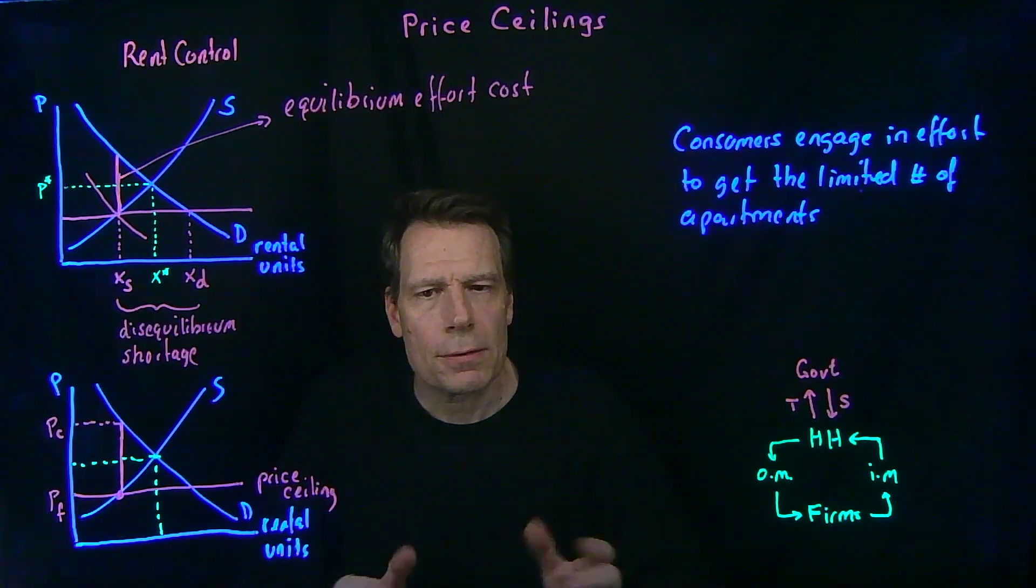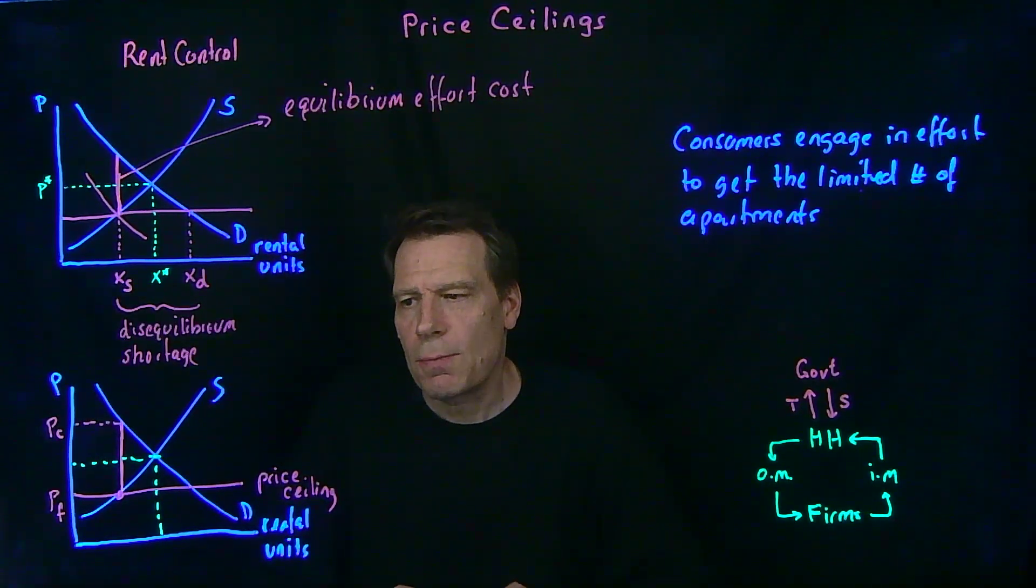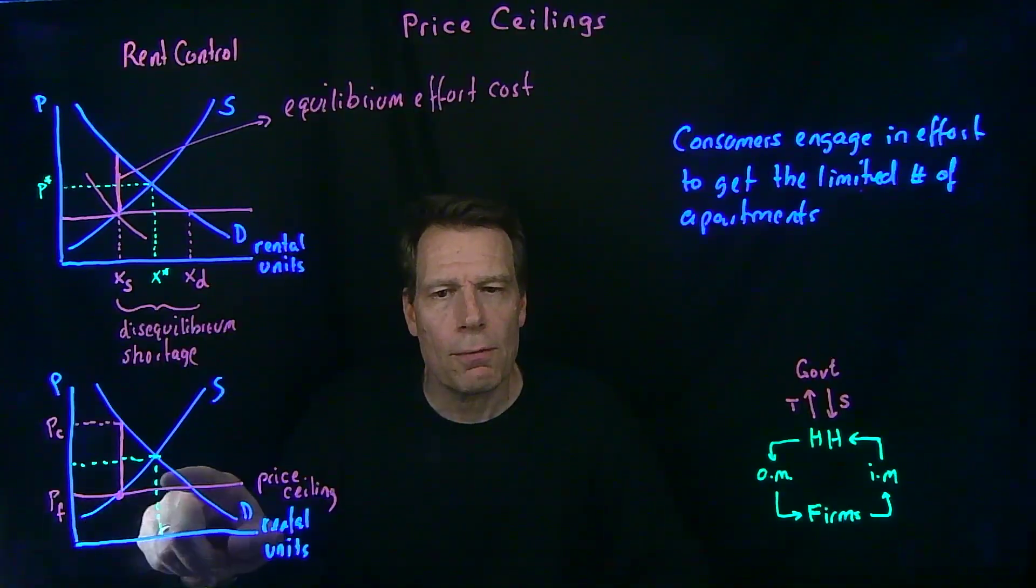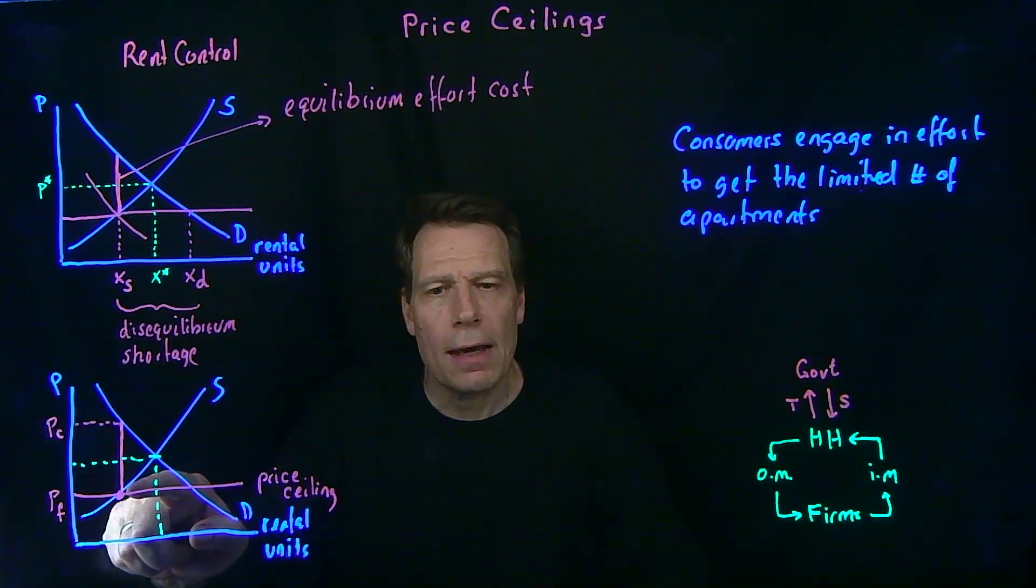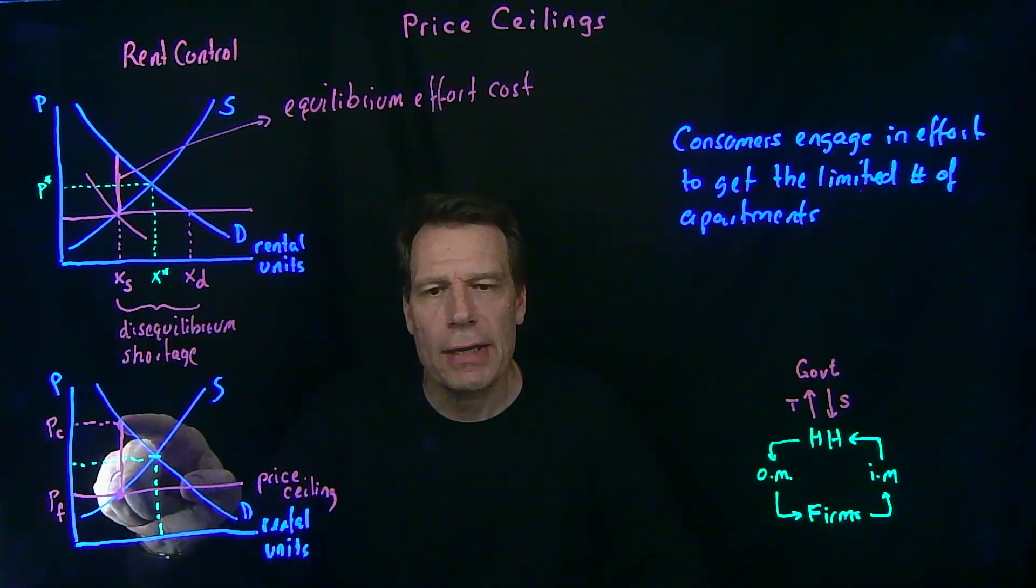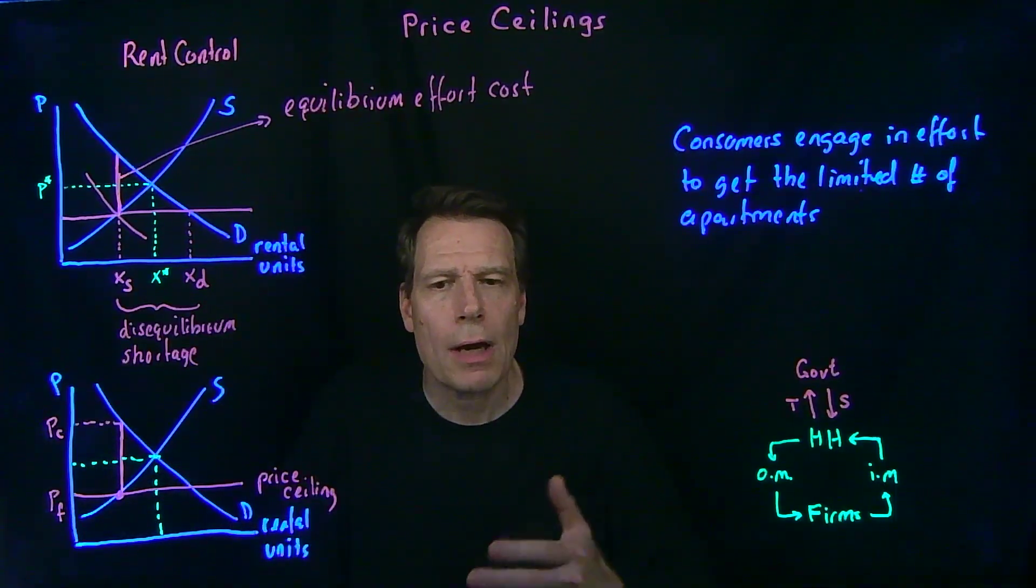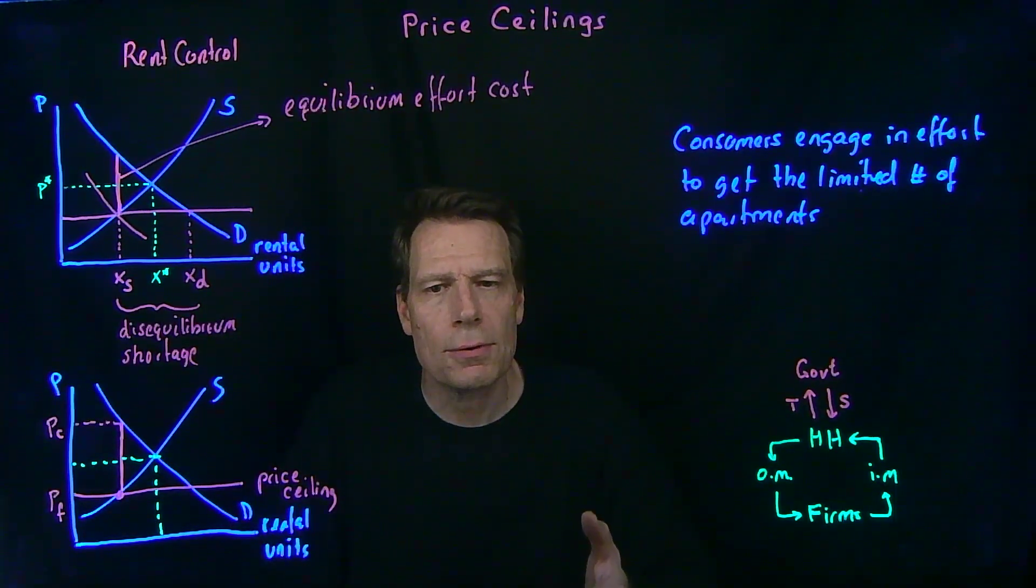Now, that's an odd result. Rent control policies are put in place in order to make housing more affordable. But this picture suggests that while firms will receive lower rents, those who end up in those apartments will actually end up paying more if we include the opportunity cost of what it takes to get into those apartments.